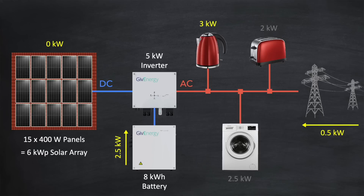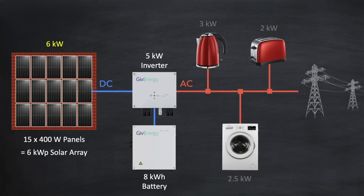One of the great benefits of a DC coupled battery is this: when the solar array is at its peak of 6 kilowatts, the inverter can only output a maximum of 5 kilowatts into the main circuit. The remaining 1 kilowatt was previously lost, but now with a DC coupled battery that 1 kilowatt can be used to charge the battery instead.